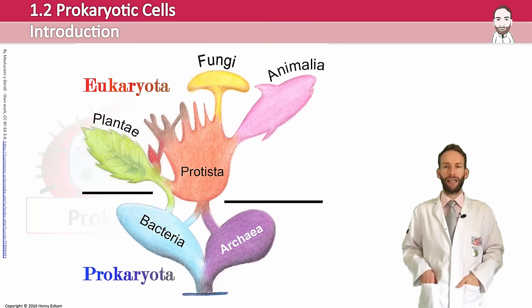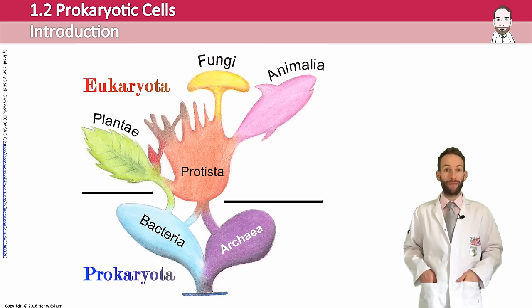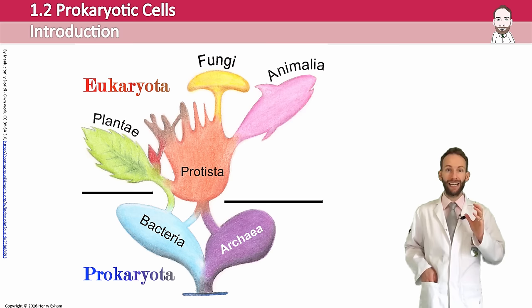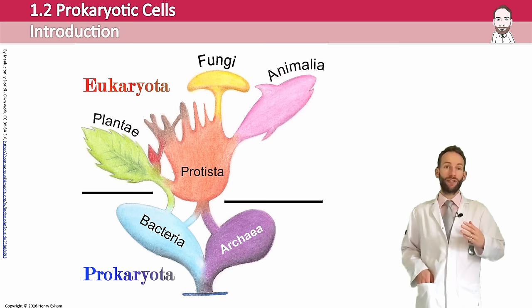Animals, plants, fungi and protists are all made up of eukaryotic cells, but we believe that they all evolved these more complex organisms from these simpler cells that lack a nucleus, which are called prokaryotic cells. So really, these are where life started, as far as we're concerned. Prokaryotic cells have some features in common with eukaryotic cells, but they also have a lot of differences.